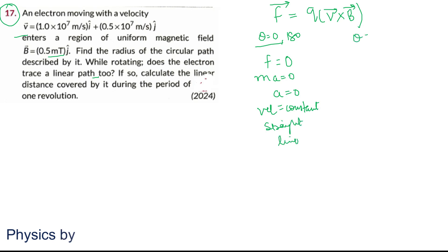If theta is 90, then force is maximum and the particle will execute circular motion. The radius we can find: M V square by R equals QVB. So R is M V upon QB.